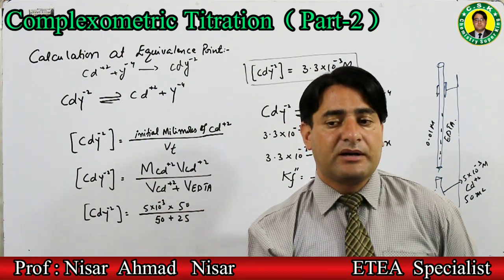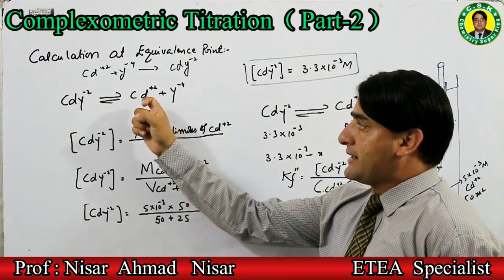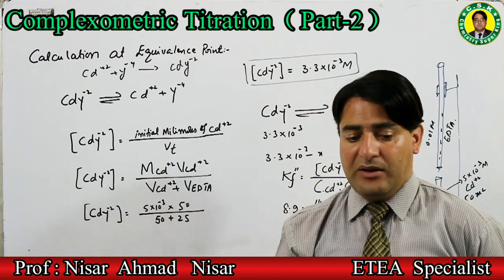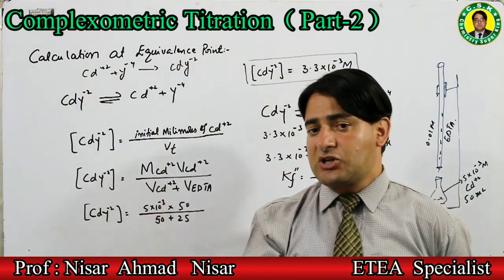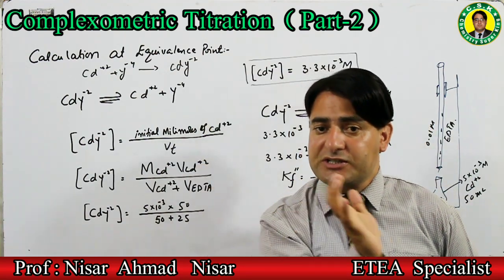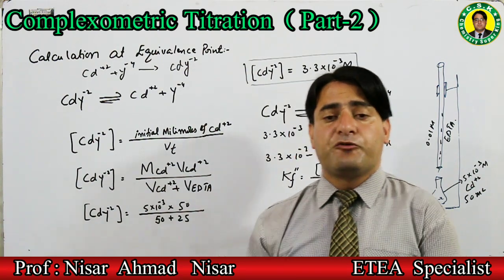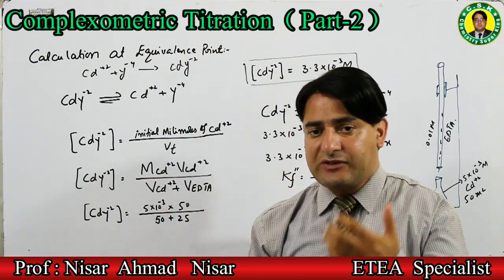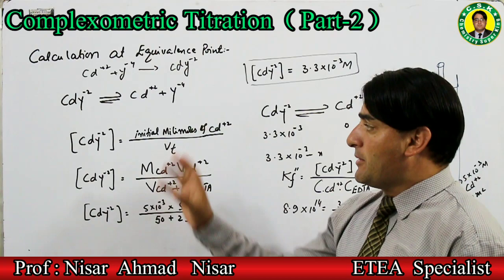CdY²⁻ کی dissociation سے ہم cadmium ion کی equivalence point پر concentration find کریں گے۔ Cadmium-EDTA complex جب dissociate ہوگا یہ بنائے گا cadmium ion اور free EDTA۔ pCd find کرنے کے لیے سب سے پہلے ہمیں complex کی concentration معلوم ہونی چاہیے، پھر free cadmium ion concentration find کریں گے using alpha × total cadmium ion concentration۔